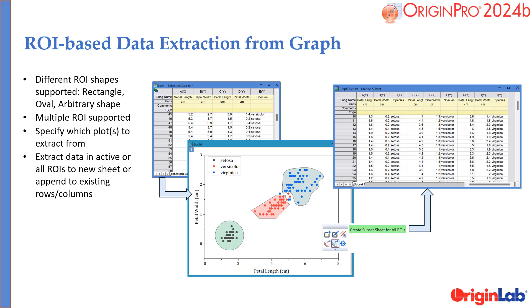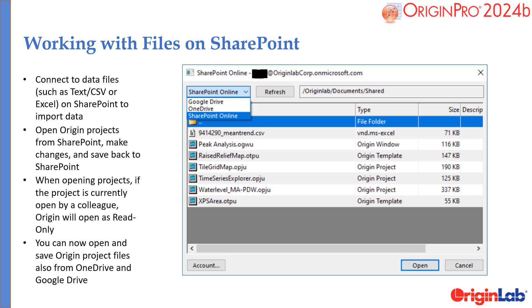It is now possible to select data interactively on a graph and then extract it to a separate worksheet. You can also now work with files stored on SharePoint directly from Origin.